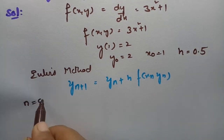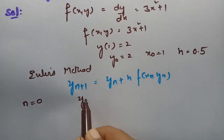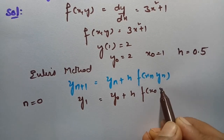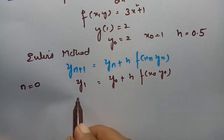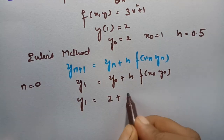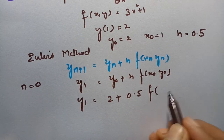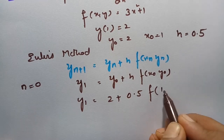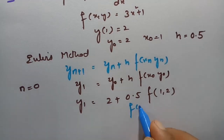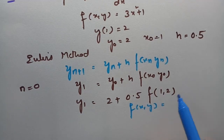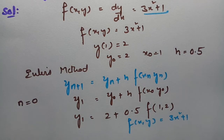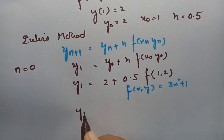Now I am going to keep n = 0. This will become y₁ = y₀ + h·f(x₀, y₀). So y₁ is equal to — x₀ is 1, h is 0.5, and f(x₀, y₀) = f(1, 2). We have f(x, y) = 3x² + 1, so substituting this in, it is 3x² + 1.